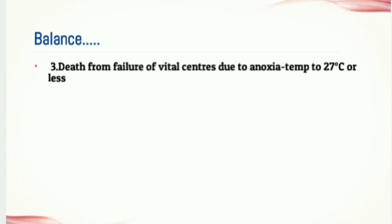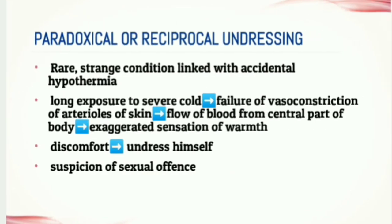Next, let's discuss a strange condition called paradoxical or reciprocal undressing. It is commonly seen in older persons and is linked with accidental hypothermia. Because of severe cold, the person takes off some or all of their clothing — they undress themselves due to discomfort caused by severe cold. Prolonged exposure to severe cold results in failure of vasoconstriction of arterioles of the skin, leading to flow of blood from the central part of the body, thus giving an exaggerated sensation of warmth. In such cases, there may be suspicion of a sexual offense, but the person undressed himself.